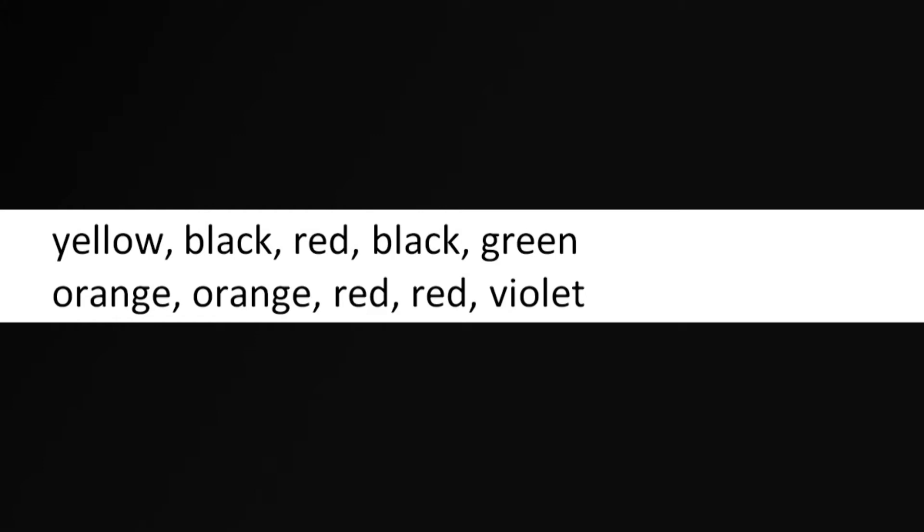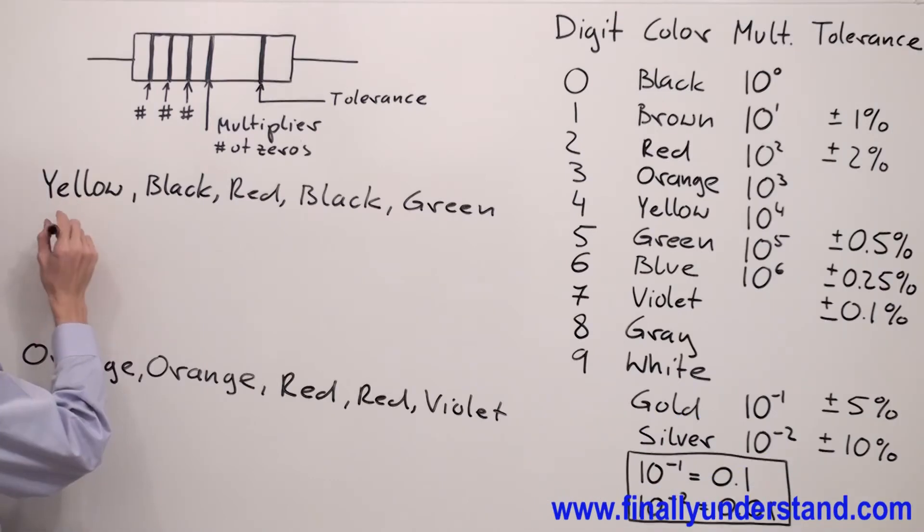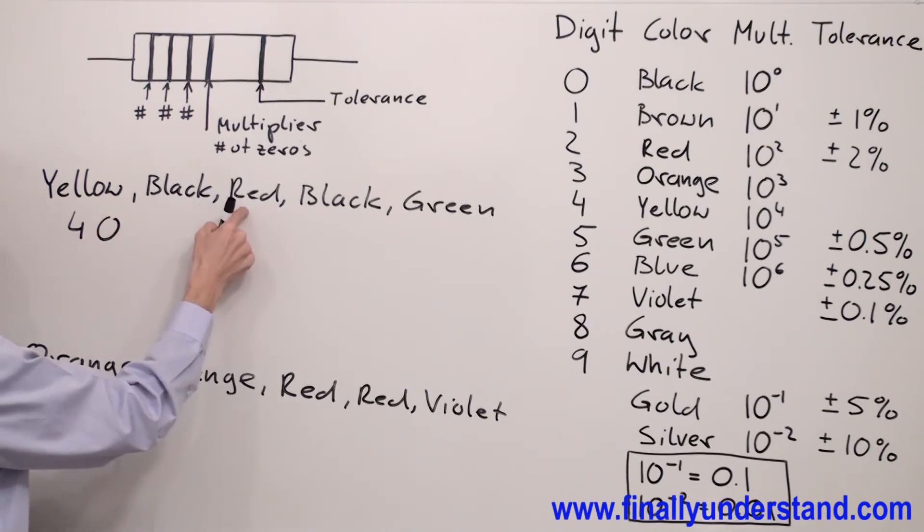Let's take a look at the first resistor. We have yellow, which is 4. We have black, which is 0. We have red, which is 2.